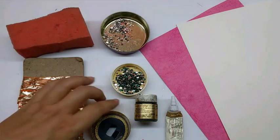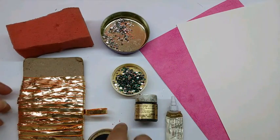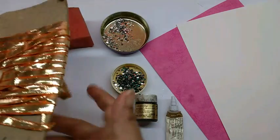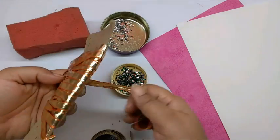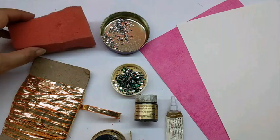A golden ribbon about half an inch wide, a metallic golden ribbon about one-fourth of an inch wide, and sponge.